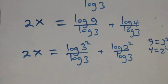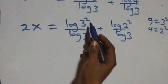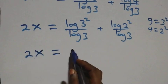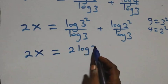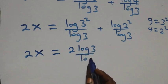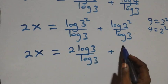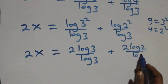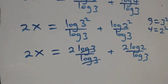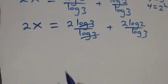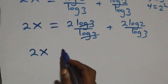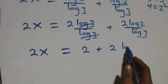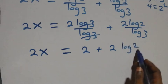When we apply the power rule of logarithms, the exponent 2 comes out front in both terms. So 2x equals 2 log 3 over log 3, plus 2 log 2 over log 3. Here log 3 over log 3 cancels to give 1, so what we have becomes 2x equals 2 plus 2 log 2 over log 3.